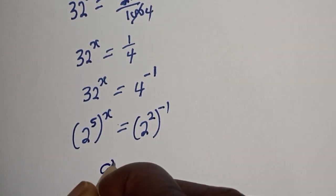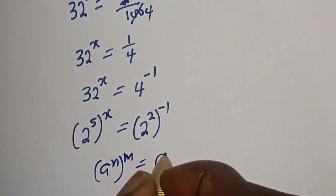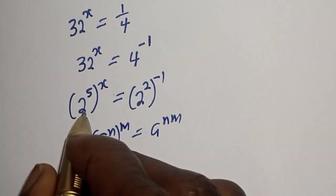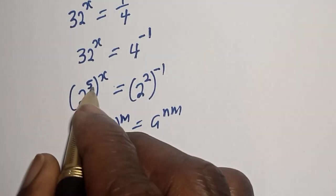Now if you have a raised to power n to the power of m, that equals a raised to power nm. Then 2 raised to power 5 to the power of s can be written as 2 raised to power 5 times s.